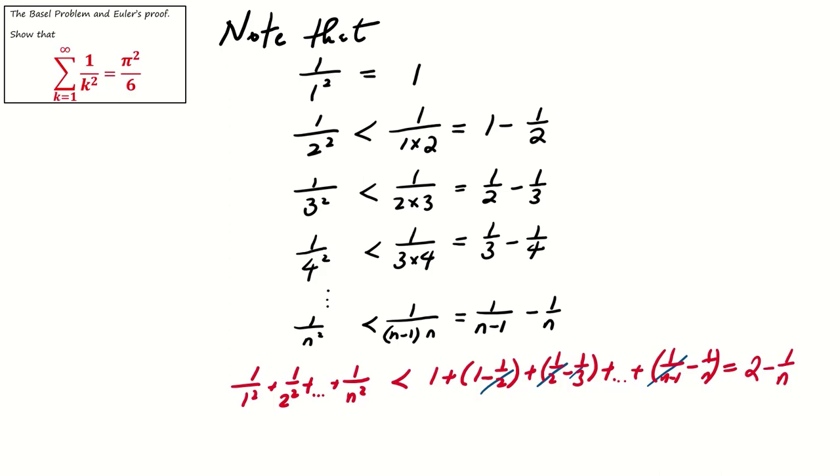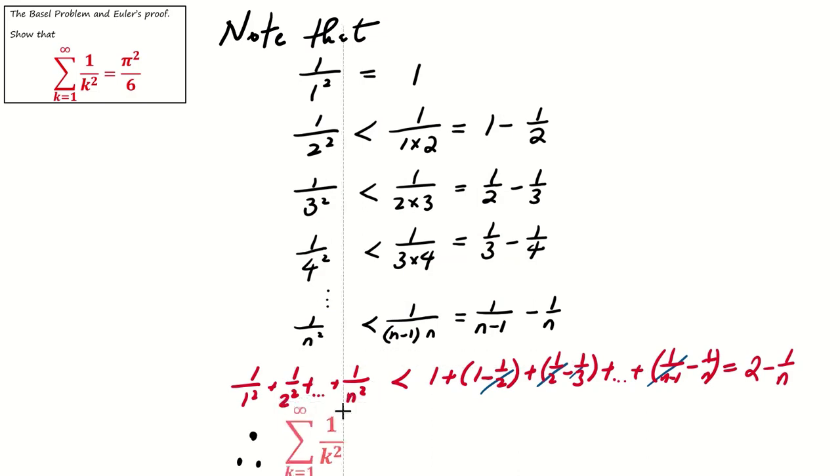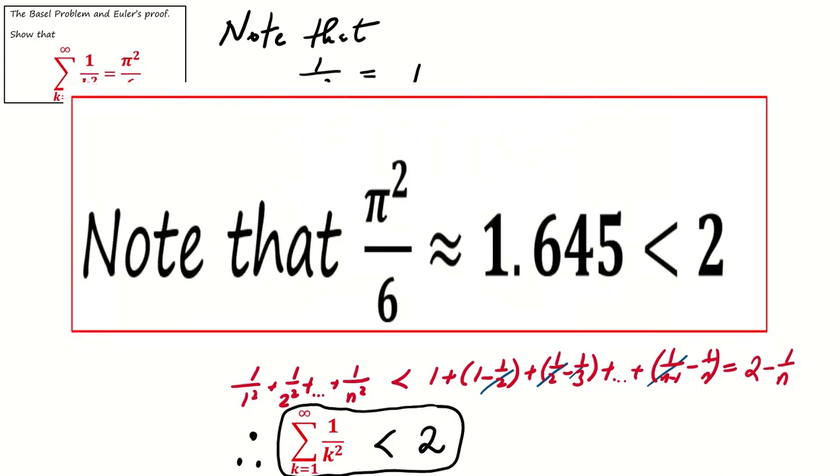Therefore we know that the sum of 1 over k squared from k equals 1 to infinity is less than 2. This is the first approximation that we can get easily. However, this is far from the exact solution.